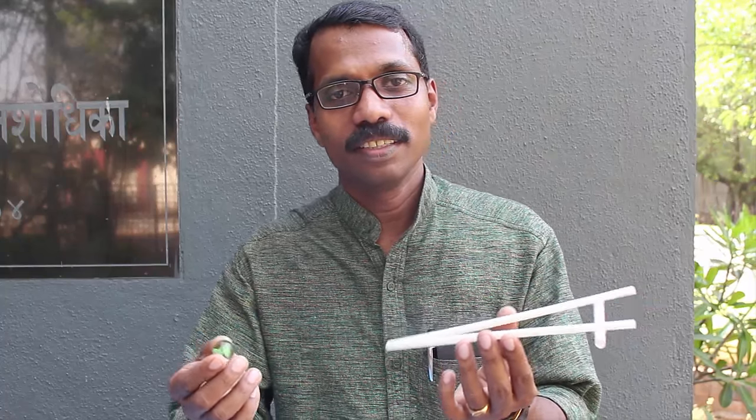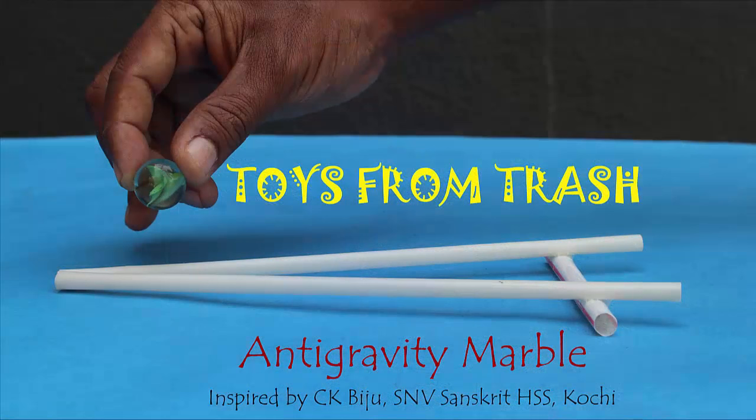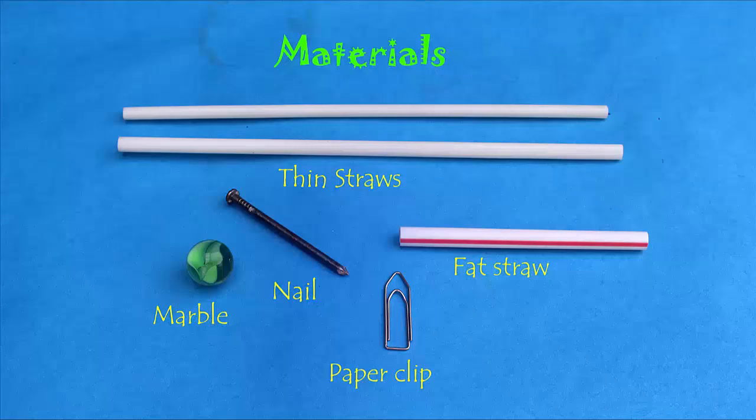Hi friends, it is a wonderful experiment to show the rolling of a marble along a slope just like anti-gravity, but it is not anti-gravity. For this experiment we need three straws, a paper clip, a nail, and a marble.